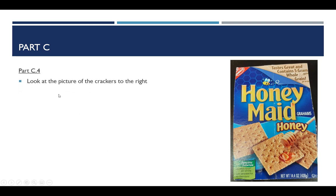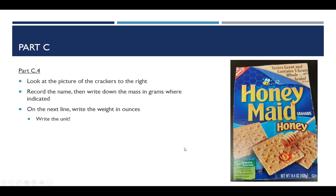So part C4 asks you to look at this commercial product, which is the Honeymade Graham Crackers. It asks you for the name, so Honeymade Graham Crackers. On the next line, you want to write down the weight in ounces, which is given down here. And don't forget the unit. And then you need to convert that to pounds using this equation: one pound is 16 ounces. So convert 14.4 ounces to pounds using the value in step 3.